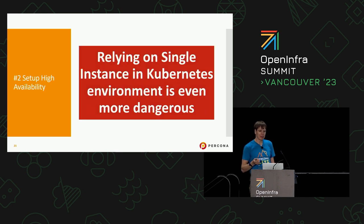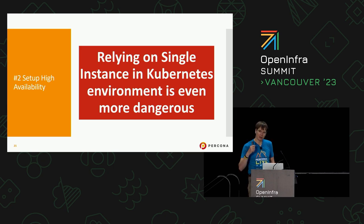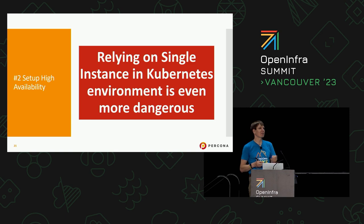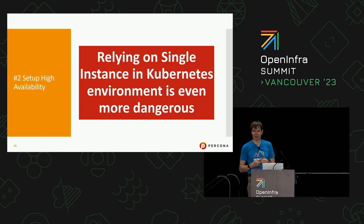Number two — you want to make sure you have a high-availability setup for your database. In Kubernetes, you do not want to rely on a single database instance never going down. There should be no pets in Kubernetes, and that applies to databases as well.